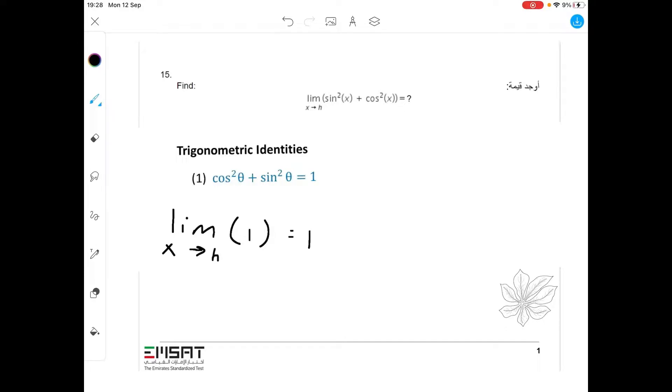So, that means that the limit as x approaches h of 1 is 1. This whole thing becomes 1, which equals 1 because it is a constant.